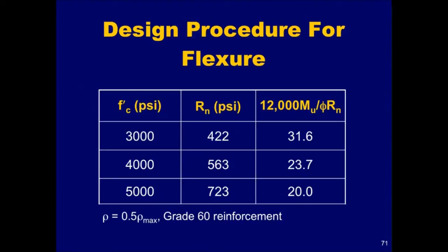The beam sizing equation can be simplified by making some assumptions for the material properties of the concrete and reinforcing steel. This table summarizes the nominal strength coefficient, r sub n, as a function of the concrete compressive strength, using 50% of the maximum reinforcement ratio and grade 60 reinforcement. Also given in the table is the quantity 12,000 times the factored moment, m sub u, divided by the design strength coefficient, phi r sub n. The 12,000 factor converts the units from foot kips to inch pounds.